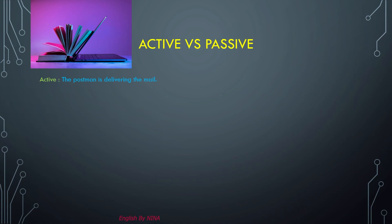For example, the active sentence is: 'The postman is delivering the mail.' Here 'the postman' is our subject, 'is' is our to-be verb, and 'delivering' is our verb — in present continuous we use subject + to-be verb + ing form. In the passive, the object 'the mail' comes first: 'The mail is being delivered' — with 'delivered' as the past participle.